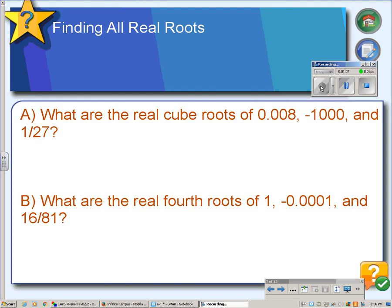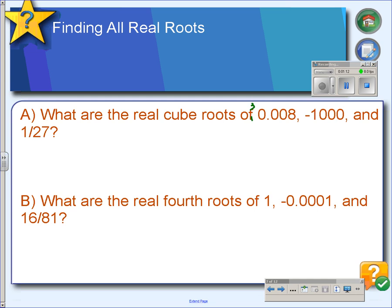So here we're going to calculate some roots. So we want to know the cube root of 0.008. The answer to that would be 0.2, because 0.2 times 0.2 times 0.2 equals 0.008, or in other words, 0.2 to the third power equals 0.008.